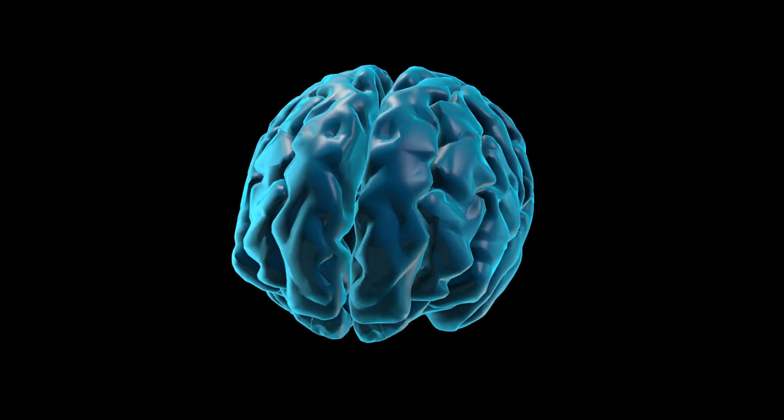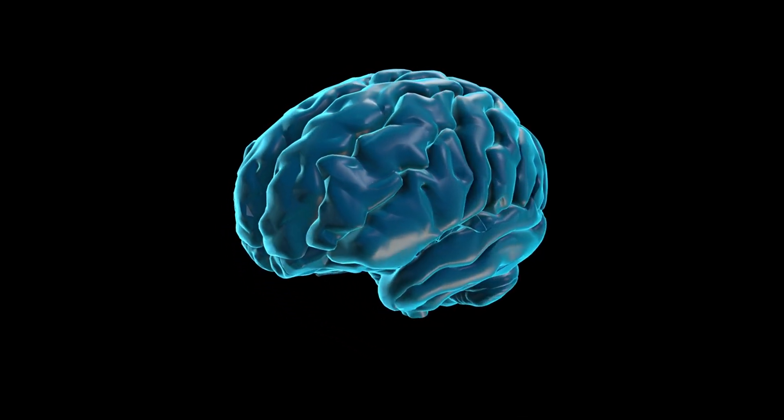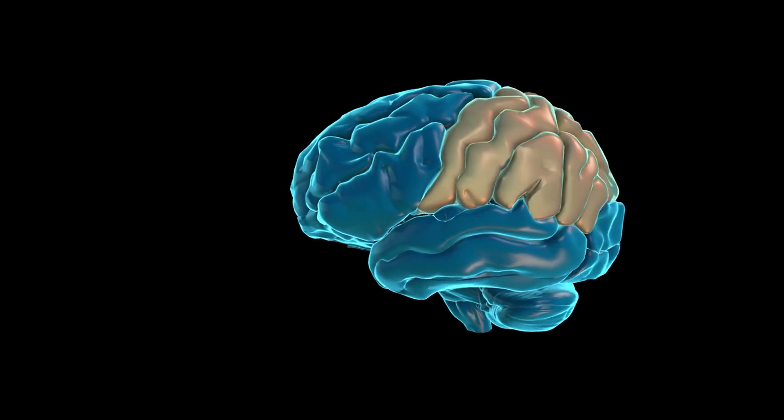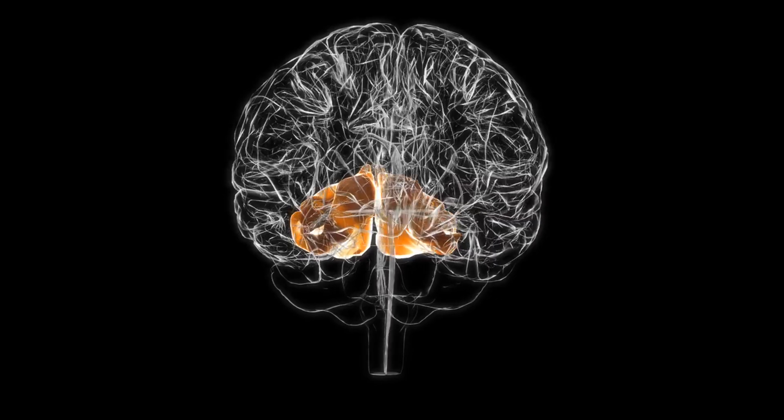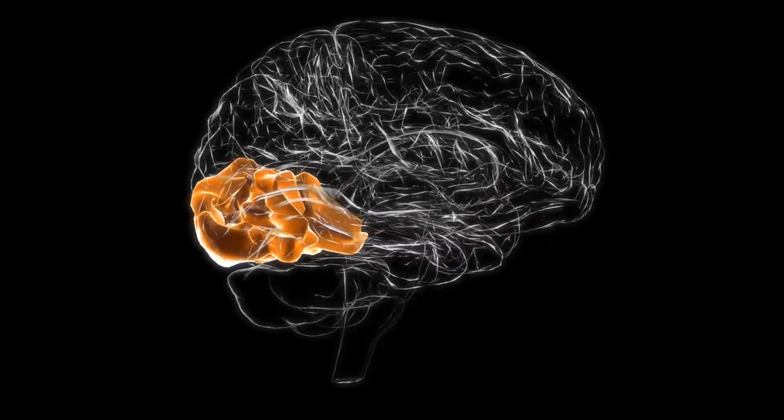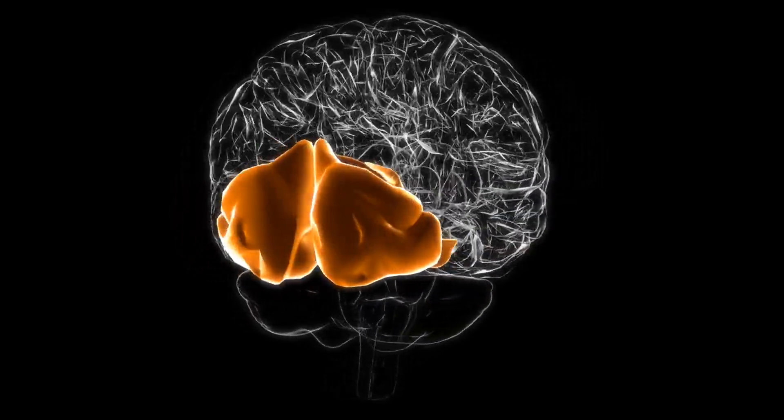The parietal lobe processes sensory information, helping us understand spatial relationships and navigate our environment. The occipital lobe is primarily responsible for vision, interpreting information from the eyes.